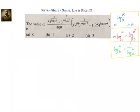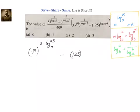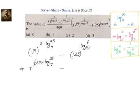Now let's go to the second part. What we have: √7 to the power of 2 — we take it to the numerator and write it as log(25) to base 7, minus 125 to the power of log(6) to base 25. Now √7 can be written as 7 to the power of 1/2, so we write 7 to the power of (1/2 × 2) into log(25) to base 7, minus 125 written as 5³, so 5 to the power of 3 into log(6) to base 25.